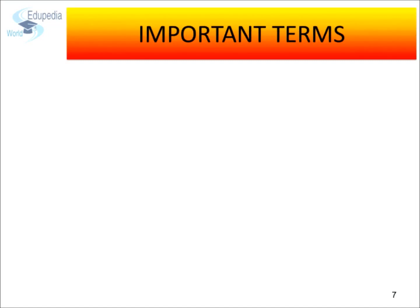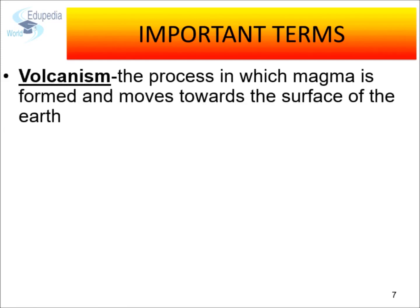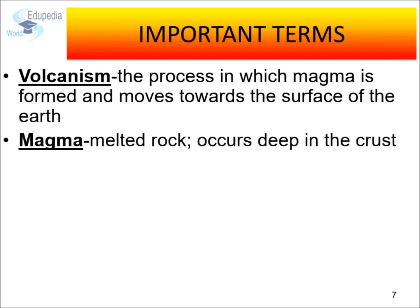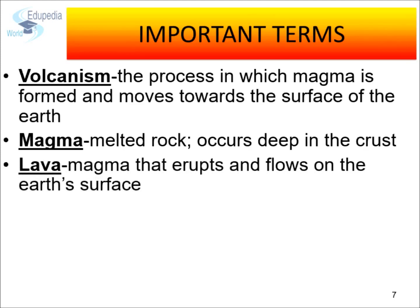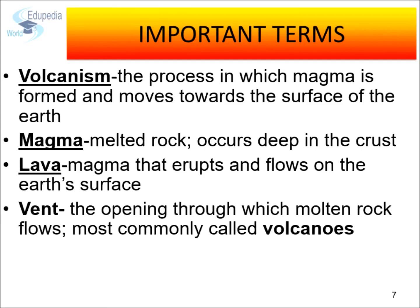Let us look at some important terms connected to Volcanism. Volcanism is the process in which magma is formed and moves towards the surface of the earth — the process by which magma is produced and erupts on the earth's surface. Magma is any melted rock that occurs deep in or within the crust. When molten rock escapes from beneath the earth's surface, it changes from magma to lava. A vent is the opening through which molten rock flows, most commonly known as a volcano.